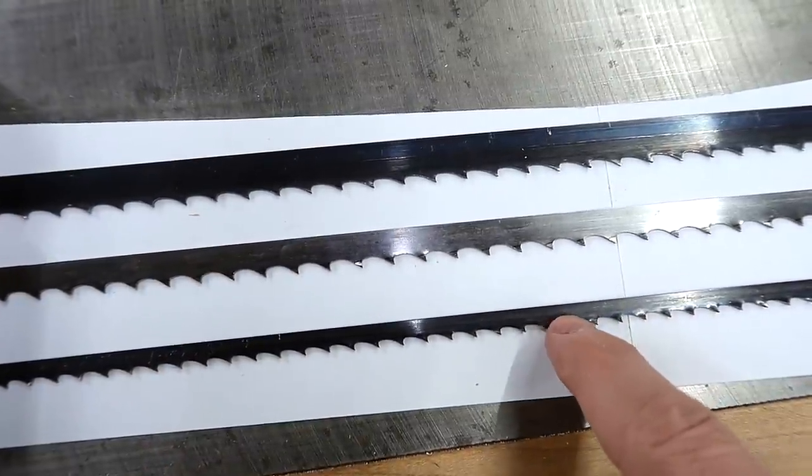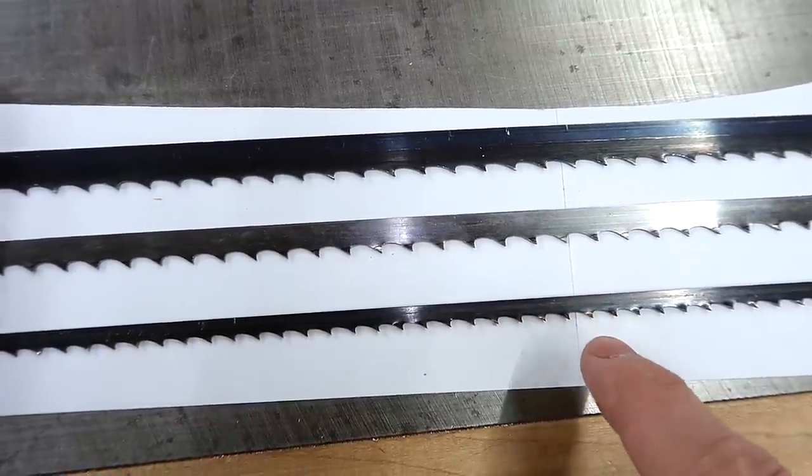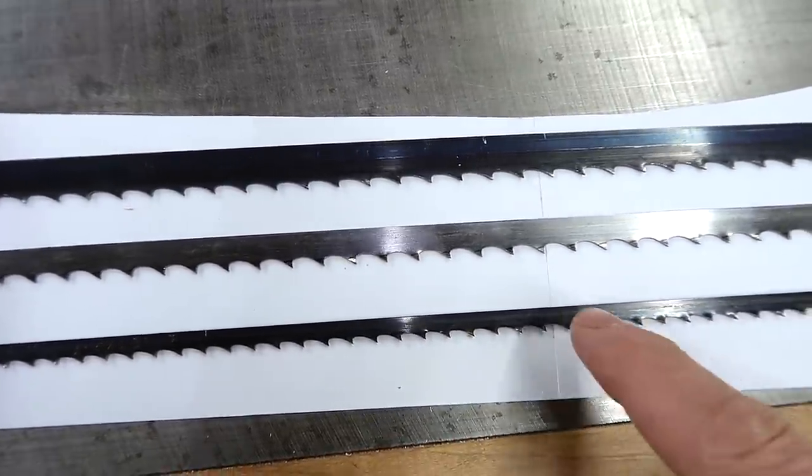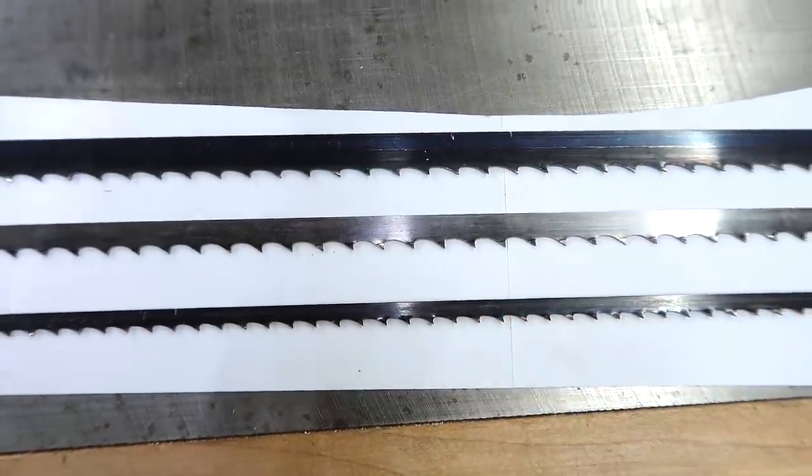And that hook can really help pull the blade into the wood faster, which is why it jumps so much. Every time it does that bang, it jumps forward in the wood.